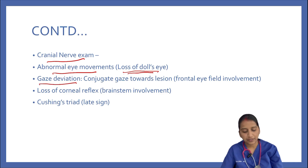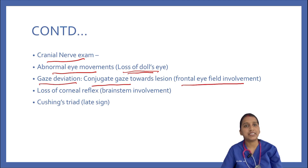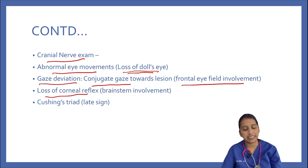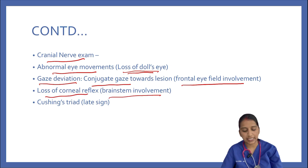Regarding gaze deviation, conjugate gaze towards one side indicates frontal eye field involvement. Loss of corneal reflex indicates brainstem involvement. We also look for Cushing's triad, which is a late sign and indicates impending herniation.